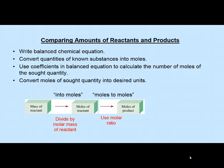Once we have the moles of the other substance—say, a product—we can convert to grams by multiplying by molar mass, or if we want the number of molecules, formula units, atoms, or ions, we multiply by Avogadro's number instead. I've provided this combustion of propane reaction, where propane burns with oxygen gas to form carbon dioxide and water vapor, along with the molar masses of all compounds already calculated. You'd want to verify you could calculate those yourself for an exam.